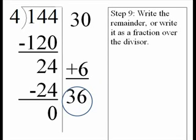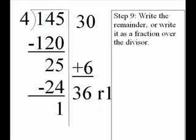Step 9, write the remainder, or write it as a fraction over the divisor. This problem doesn't have any remainder, so we don't need to write 0. However, if the number was 145 instead of 144, we would have ended up with a remainder of 1. So we could write it as 36 remainder 1, which means 36 in each group with 1 left over.